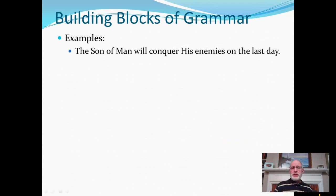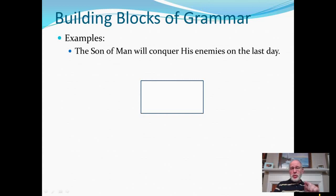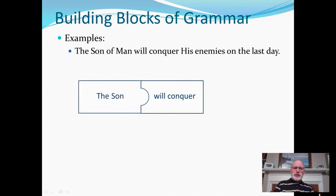One more sentence, quite a different one: The son of man will conquer his enemies on the last day. Here's a square in the middle — what goes there? The verb goes there. Which word is the verb? The future tense verb 'will conquer' is the verb of this sentence. Now we know it has to have a subject. Who or what will conquer? Let's go with 'son' right now — we'll come back to 'of man' in a moment. The son will conquer.